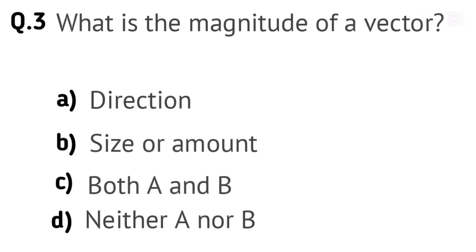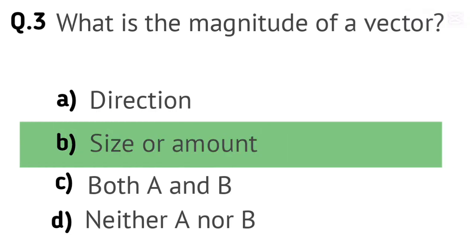Question 3. What is the magnitude of a vector? Options: A. Direction. B. Size or Amount. C. Both A and B. D. Neither A nor B. Right answer is B. Size or Amount.